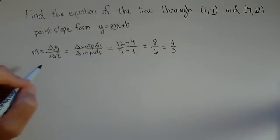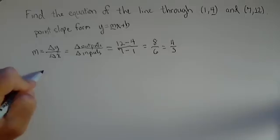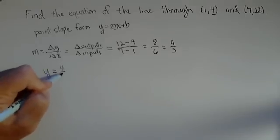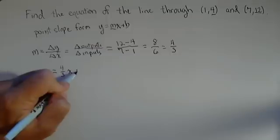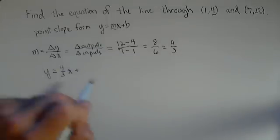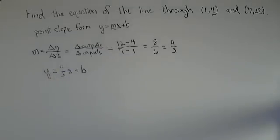Now, we need to find the y-intercept. Well, here's what we have for our point slope form so far: y equals 4 thirds x plus b. Well, we don't know b yet, so I'm going to just represent it with b.